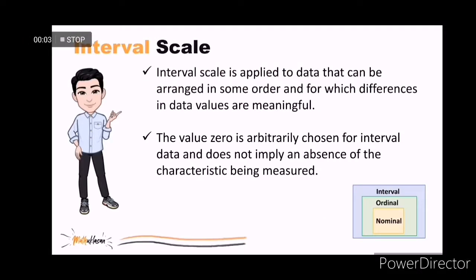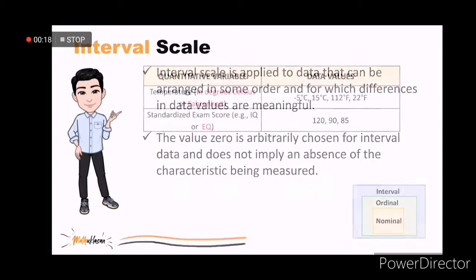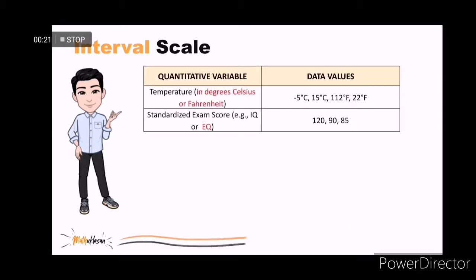As mentioned, values for a numerical variable are measured on an interval scale or a ratio scale. An interval scale is an ordered scale in which the difference between measurements is a meaningful quantity but does not involve a true zero point. Examples are temperature and standardized exam scores. If the temperature is zero degrees Celsius, it does not imply the absence of temperature. The value zero was just arbitrarily chosen.